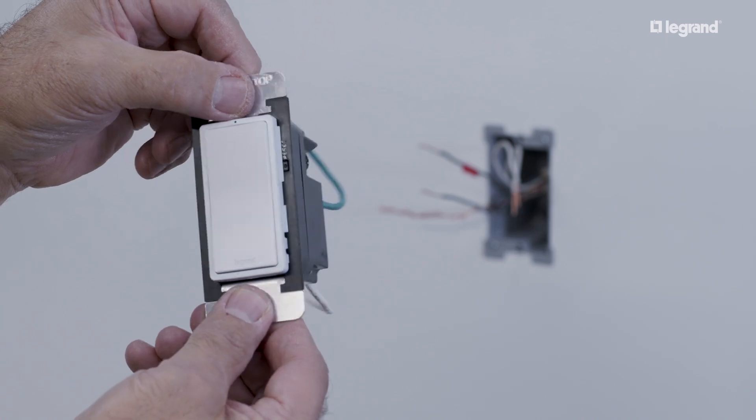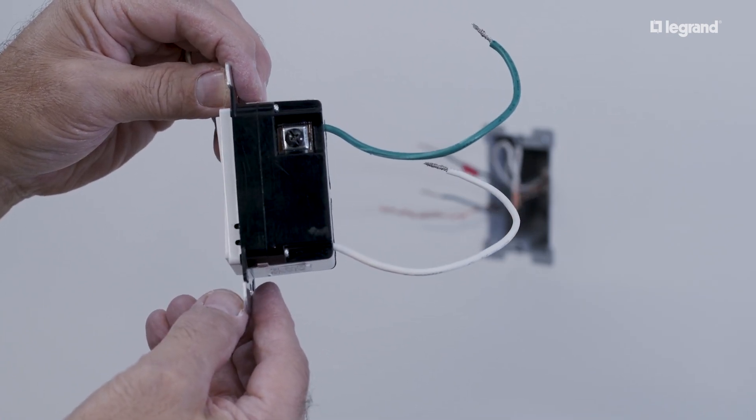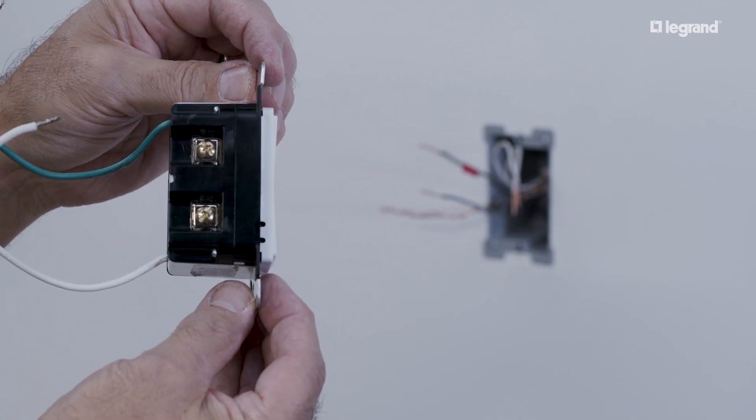Your new smart switch comes with two existing wires coming out of the device, your neutral and ground wires, and features screw terminals for the remaining connections.